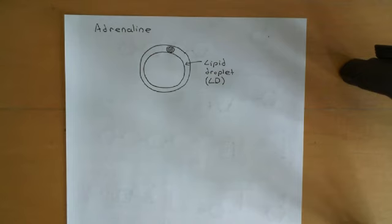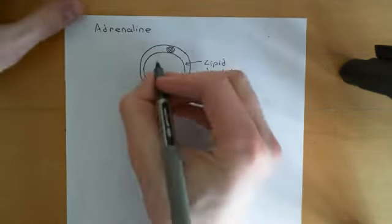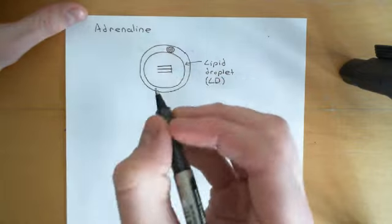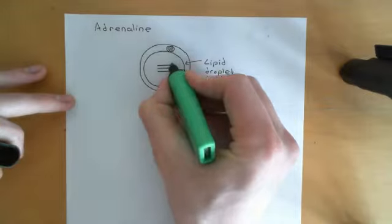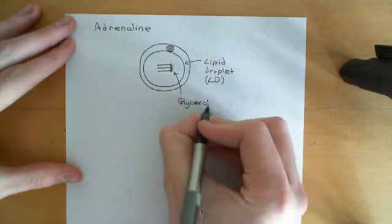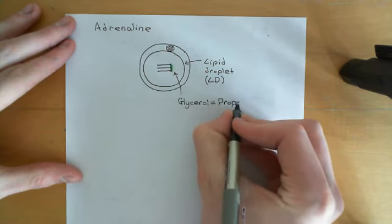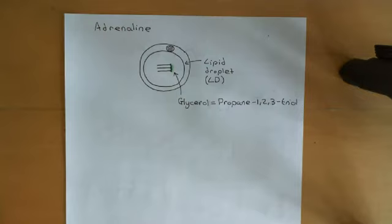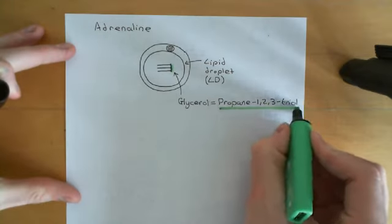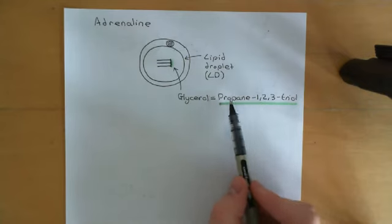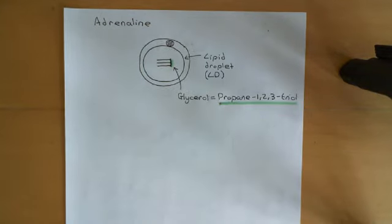A lipid droplet is a huge storage of triacylglycerols mainly. A triacylglycerol consists of a glycerol molecule — represented by a vertical line in green — and glycerol has a more correct chemist's name: propane-1,2,3-triol. That's a more useful name than glycerol because it tells us we're dealing with a three-carbon molecule where we have alcohol groups coming off the first, second, and third carbons of that molecule.